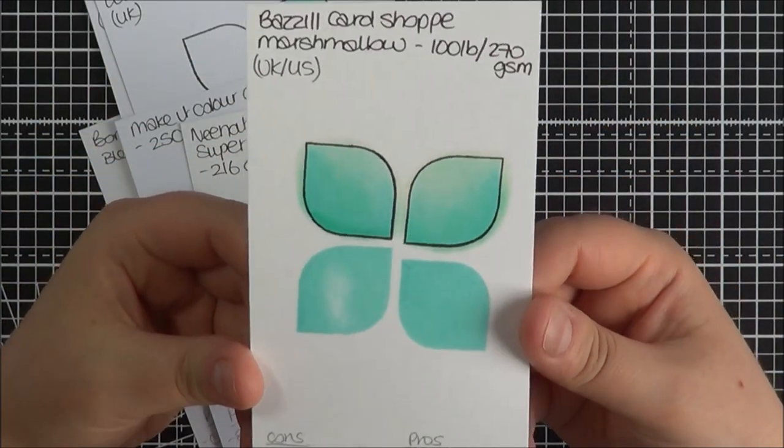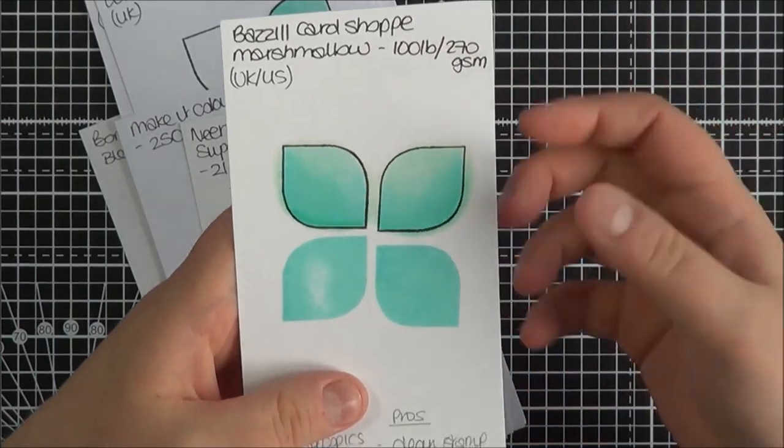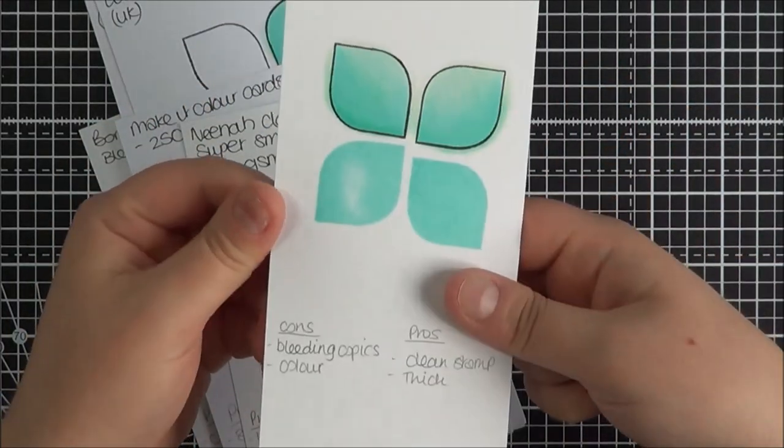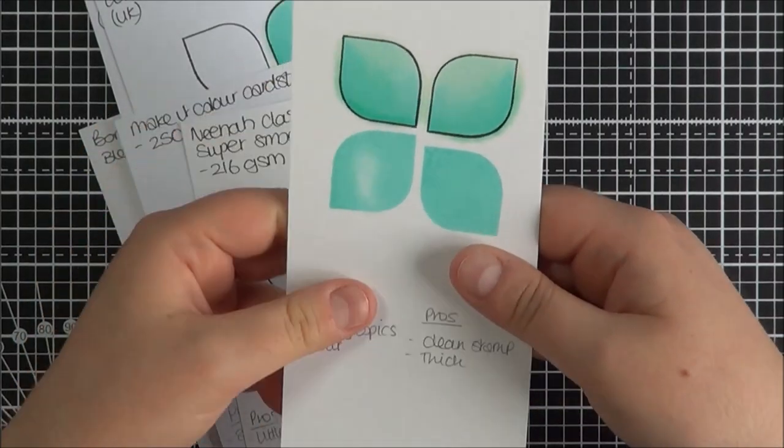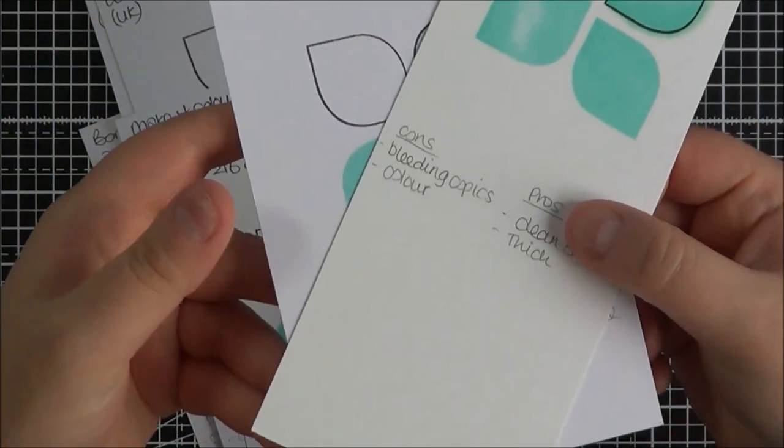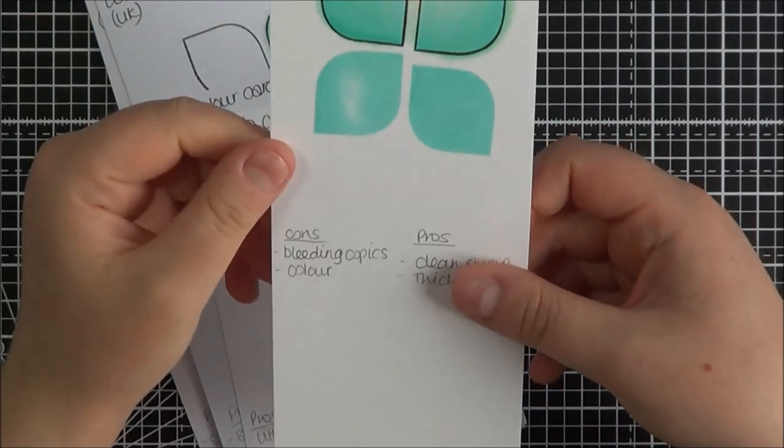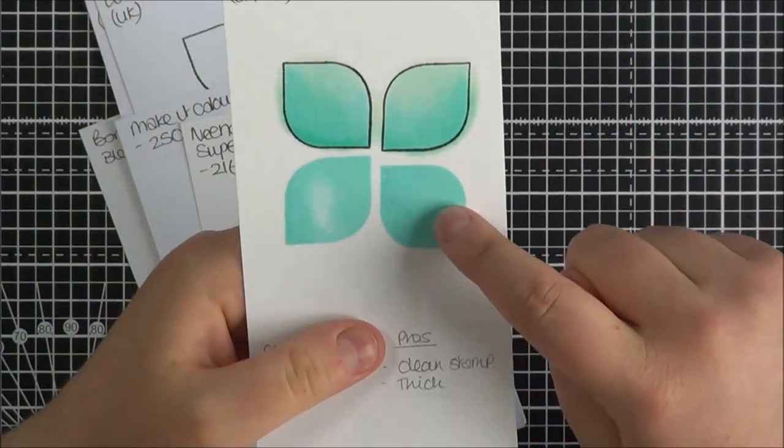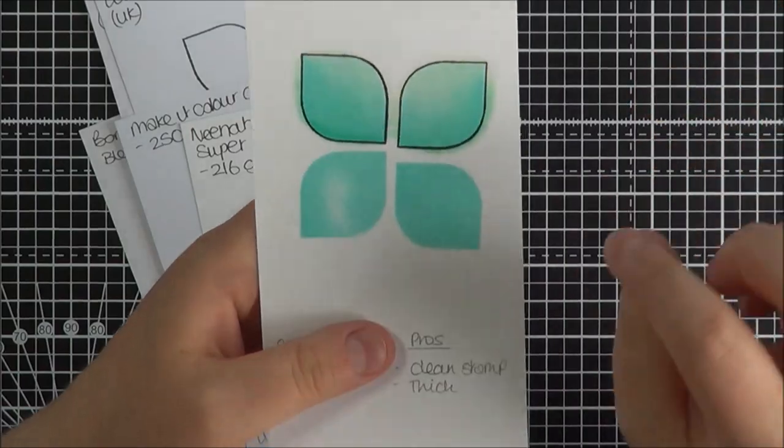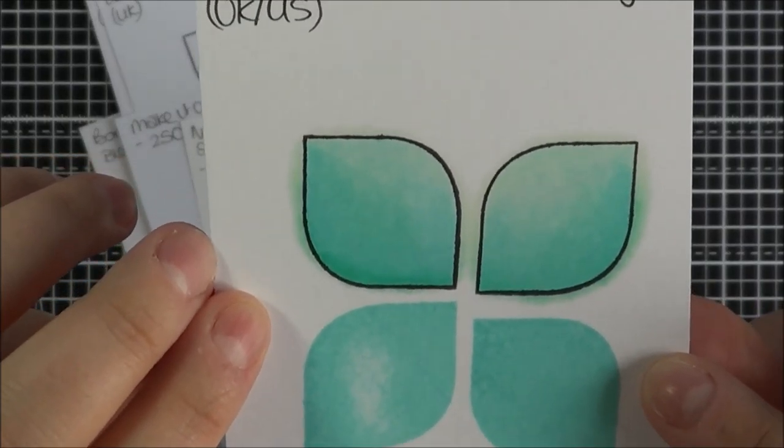I then got the Basil Card Shop Marshmallow 110 pounds. I did write 100 pounds here but I think it's 110 pounds I believe which is around 300gsm. You can get it in both the UK and the US. In the UK you can only get separate sheets currently. The only thing with this is if I compare it to another white cardstock, it's quite creamy as opposed to bright white, but when it's on its own you can't really notice that. Stamping wise this stamp came out quite well, this one not so much. I have heard from Basil that this is Copic friendly. I don't know if you can see here but the bleeding again awful, absolutely awful.